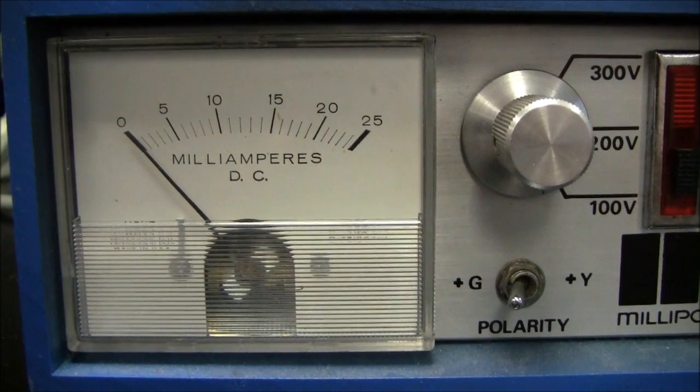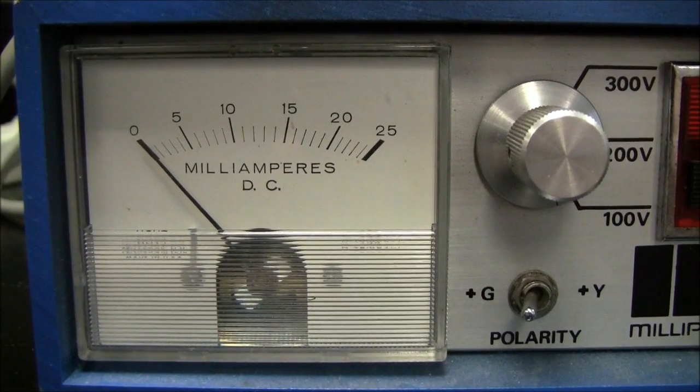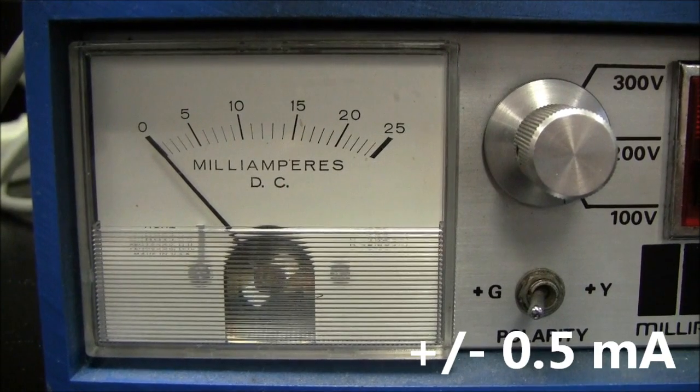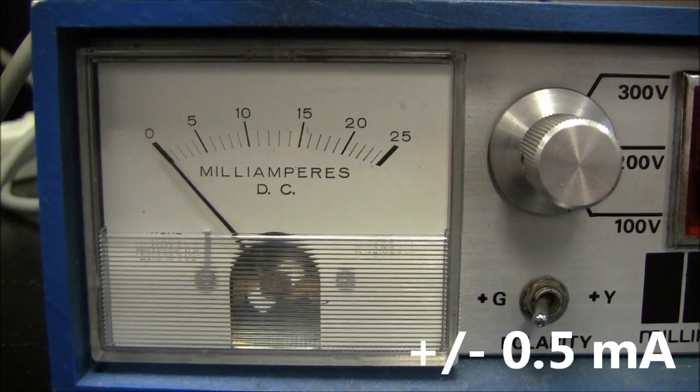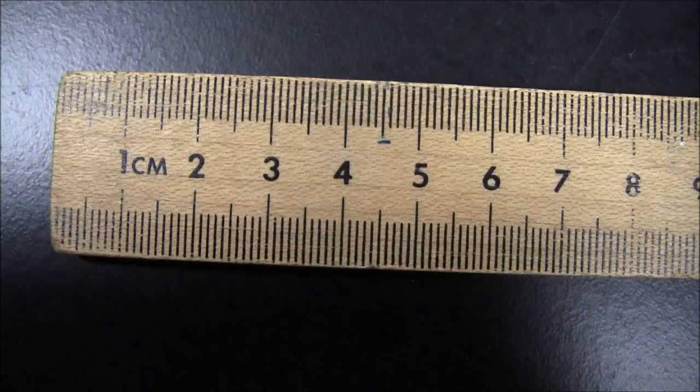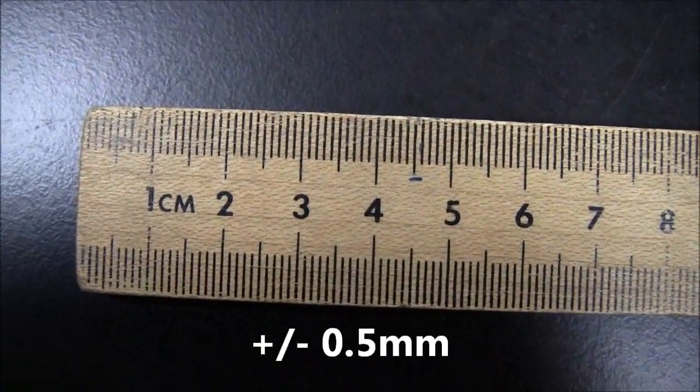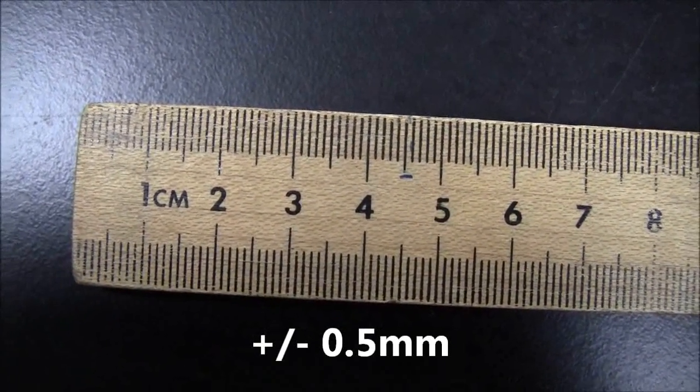Now, onto analog, each division is 1 milliamp, so the smallest division divided by 2, that's 0.5 milliamps, is the uncertainty. This rule is in millimetres, and the smallest division divided by 2 gives me 0.5 millimetres uncertainty.